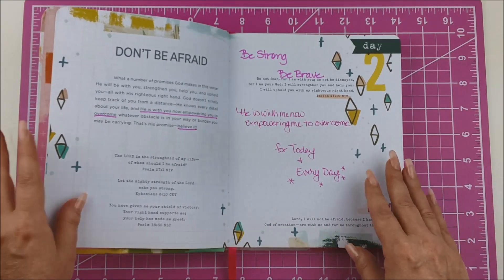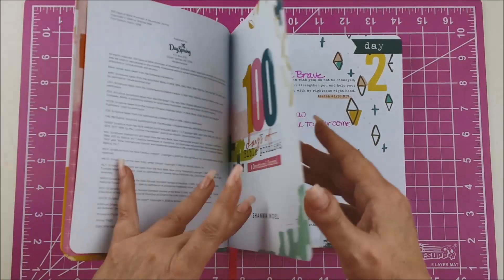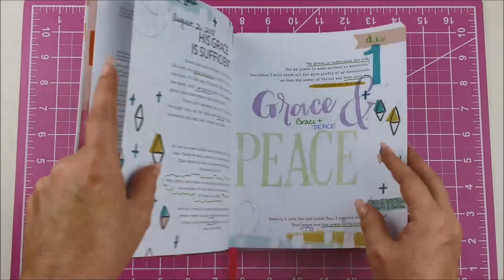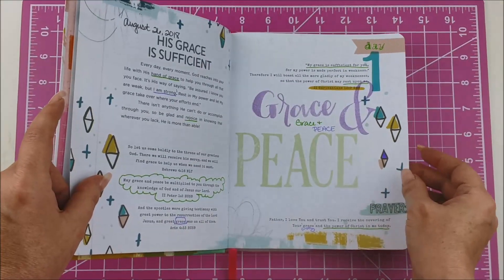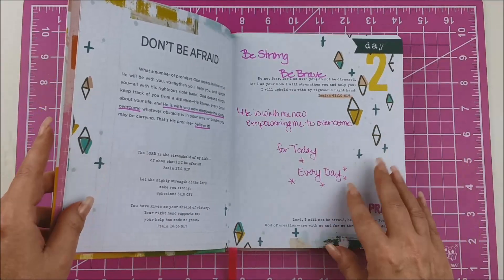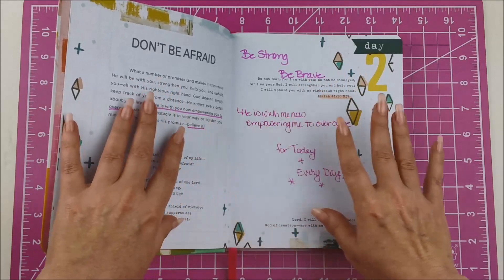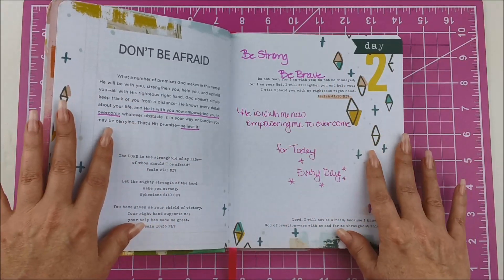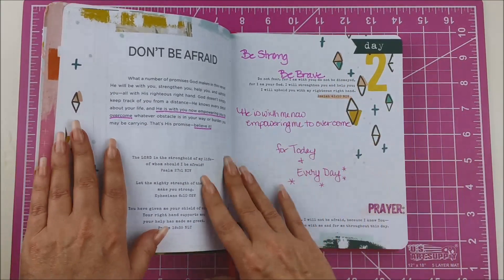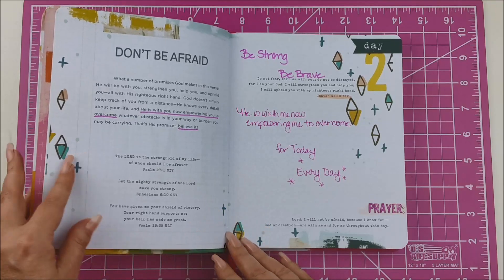So, I just felt, especially with the stamping, that it would be so much easier to have a flat surface and be able to remove the pages as I'm working in them, kind of like you do with a happy planner, where you can pull out the pages, work on them, do your decorating and journaling, and then slip them back into the discs.